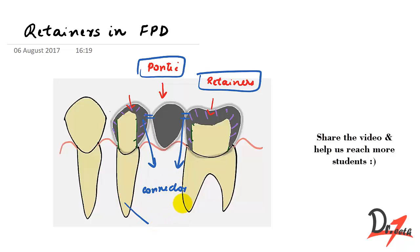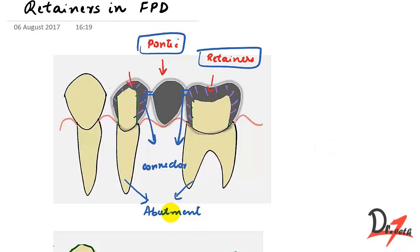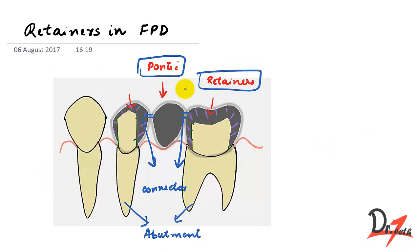The teeth being prepared are called abutment teeth. So to summarize: we have the pontic, the retainer, the connector, and the abutment teeth. Today we are going to talk about the retainers — what they are, how they are classified, and the criteria to select them.